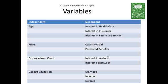Age is often an independent variable, and it might influence one's interest in health care, insurance, or financial services. So there's an example of an independent variable which influences different dependent variables.